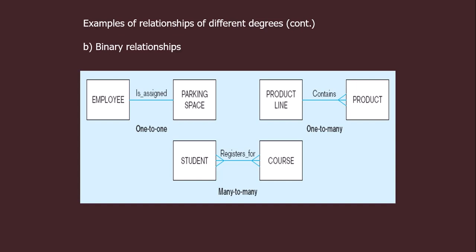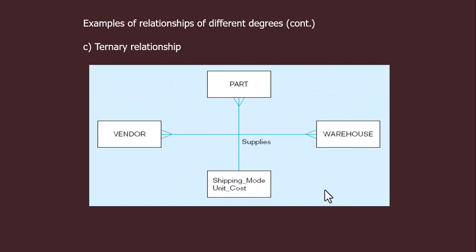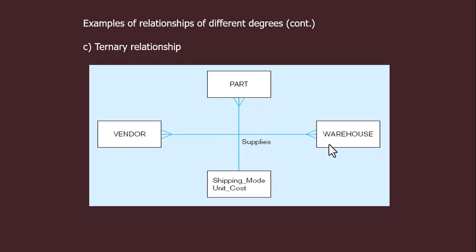We have covered three different cardinalities in binary relationships. This is the ternary relationship, which exists among three different entities — the first entity is a vendor, the second is a part, and the third is a warehouse. This is a many-to-many cardinality example, meaning many vendors can supply many parts to many warehouses.